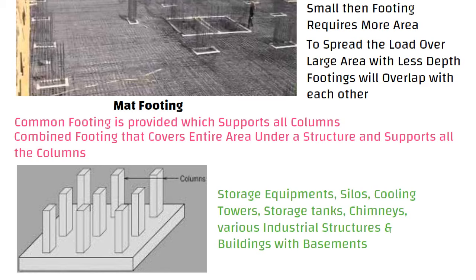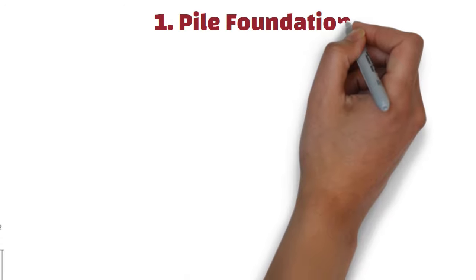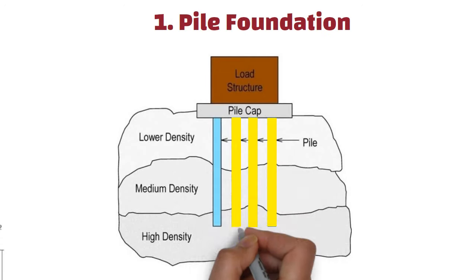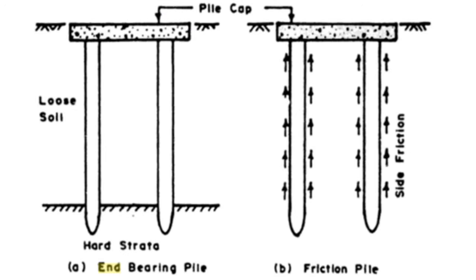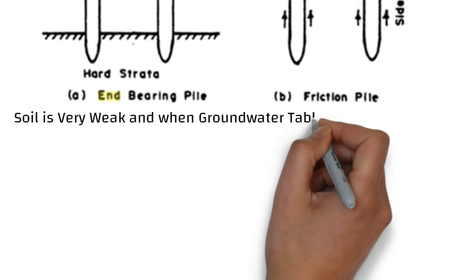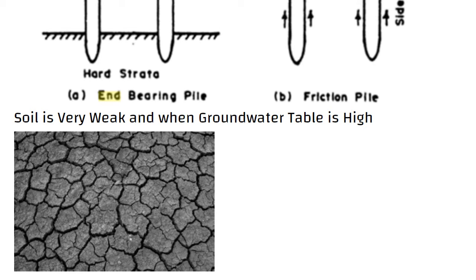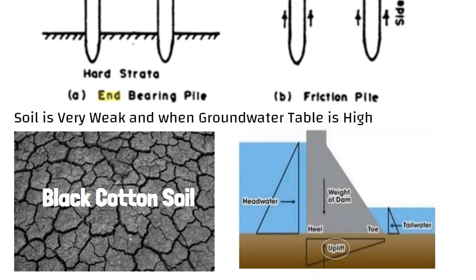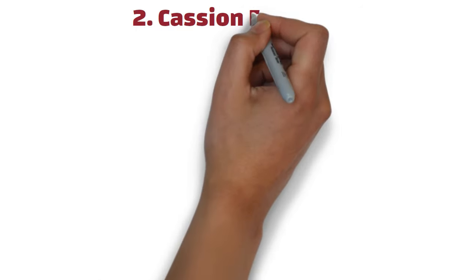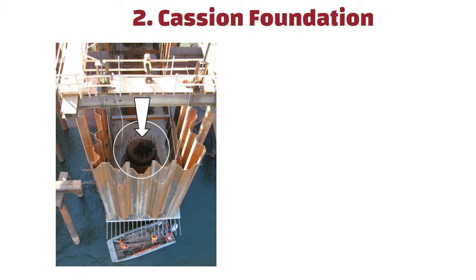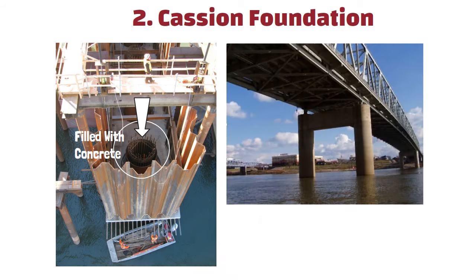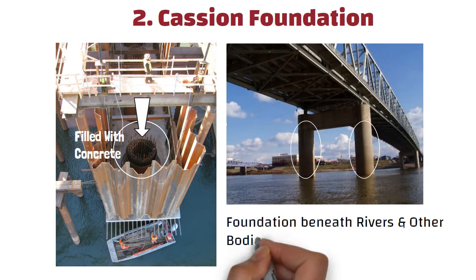We understood the types of shallow foundations. Now let us understand the types of deep foundations. First, pile foundation: a long slender column made of steel, reinforced concrete, or sometimes timber, used to support the structure and transfer the load at the desired depth either by end bearing or skin friction. Pile foundation is used when the soil is very weak, when the ground water table is high, when there is expansive soil or black cotton soil, when the structure is subjected to uplifting forces, or when there is soil erosion. Second, caisson foundation: a prefabricated hollow box or cylinder is sunk into the ground to some desired depth and then filled with concrete to form a foundation. Caisson foundation is most often used in the construction of bridge piers and other structures that require a foundation beneath rivers and other bodies of water.